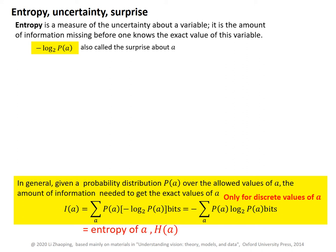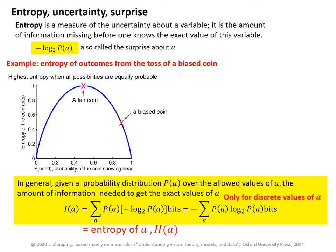Let's illustrate by an example the entropy of the outcomes from the toss of a coin. When you toss a coin, the outcome has two possibilities: head or tail. In this plot, the horizontal axis marks the probability that the outcome is head. When this probability is 0.5, the head and tail are equally likely outcomes — it is a fair coin. When this probability for head is 0.9, it is a biased coin, since 90% of the time the outcome is head.